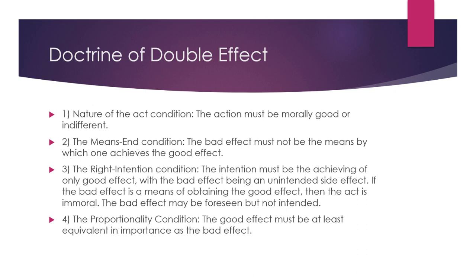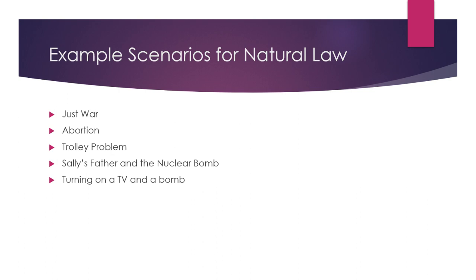Right intention condition: if your intent is to remove the uterus to stop the cancer, and you know the embryo or fetus will not survive as an unintended side effect, you may foresee it but not intend it — so you meet that condition. Proportionality condition: one life is not going to survive, but the other could survive — you have proportionality of one for one, which is at least equivalent in importance. So in certain cases you may be able to justify an action that would end a pregnancy, but under normal circumstances, using natural law, terminating a pregnancy is probably not going to be seen as a moral option.